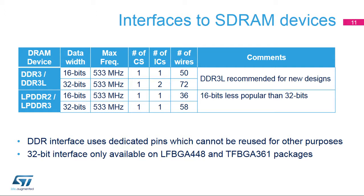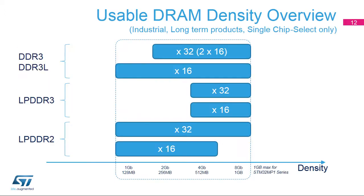The STM32MP1 series supports DDR3 or DDR3L memory devices in either 16-bit or 32-bit interface configuration, on some packages only. As neither DDR3 nor DDR3L memory devices exist with a 32-bit interface, this configuration requires two devices, which use a great deal of PCB space. Package ball pitch is 0.8 mm, which is adapted to industrial robustness. LPDDR2 or LPDDR3 memory devices mostly exist in 32-bit versions and offer lower signal count than DDR3/DDR3L. The package is smaller, but the pitch can be 0.67 mm, 0.5 mm, or below, requiring additional PCB cost. The STM32MP1 series supports between 1 gigabit (128 megabytes) and 8 gigabits (1 gigabyte) of DRAM memory.